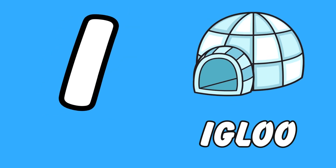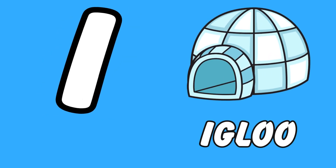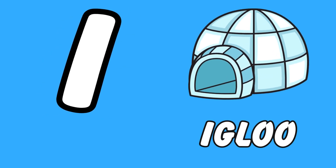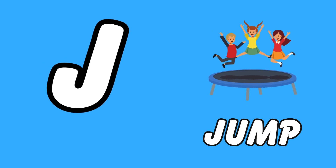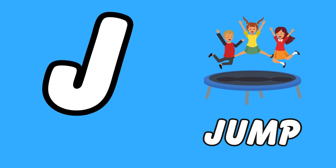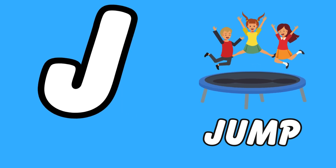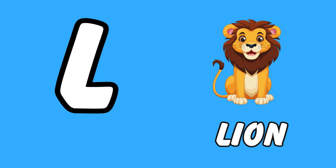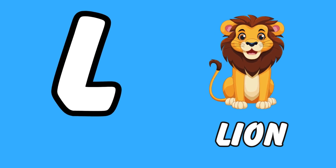I is for Igloo, I, I. Igloo. J is for Jump, J, J. Jump. K is for Kangaroo, K, K. Kangaroo. L is for Lion, L, L. Lion.